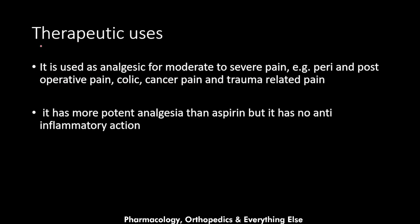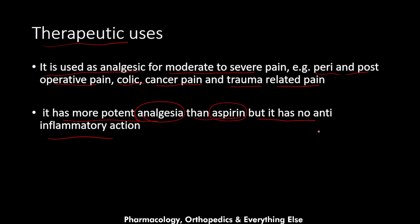Regarding the therapeutic uses, novalgine is used as an analgesic for moderate to severe pain — for example, peri- and post-operative pain, colic, cancer pain, and trauma-related pain. It has more potent analgesia than aspirin, but it has no anti-inflammatory action, so compared to aspirin it provides better pain relief but lacks anti-inflammatory effects.